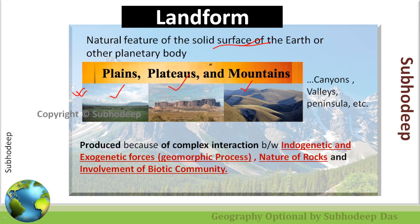There are many third order landforms as well, like valleys, peninsulas, and canyons. If we observe landforms in oceanic bodies, then the second order landforms are continental shelves and continental slopes, and the third order landforms are sea mounts and canyons. These are different kinds of landforms which we observe both on land and over the ocean, and they are formed by the complex interaction of different processes like endogenetic and exogenetic processes.